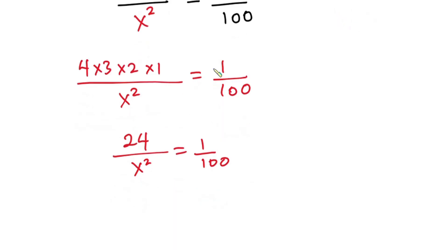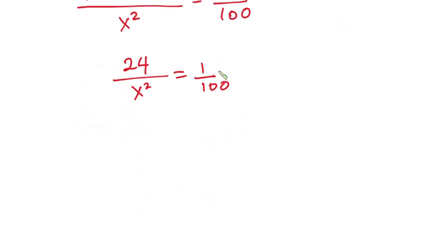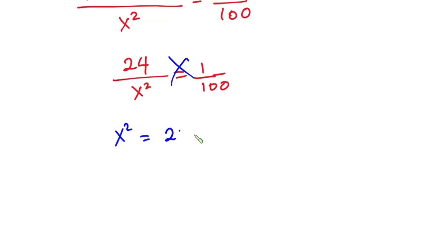Now from here, we can just cross multiply. So we have x squared is equal to 24 times 100, which is 2400.